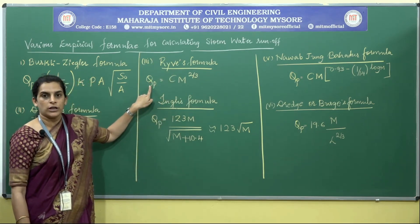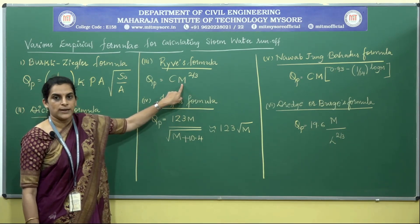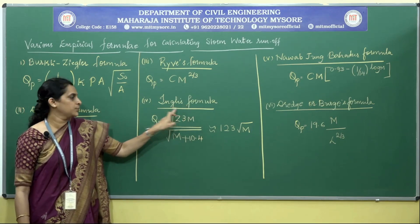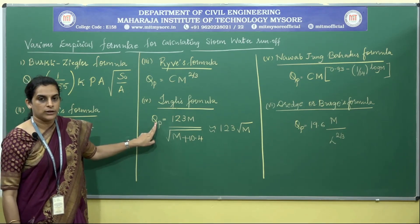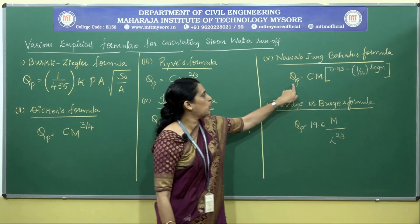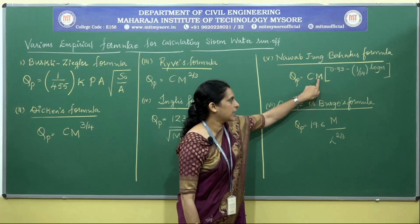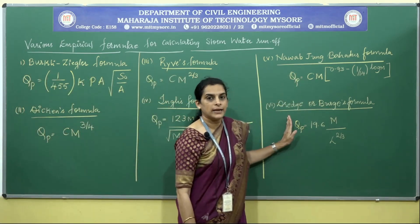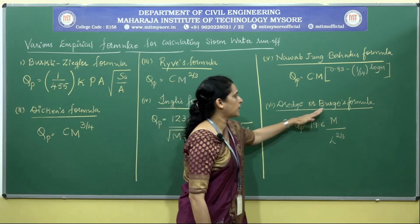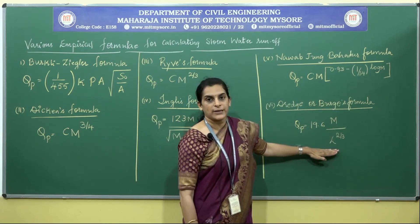The fourth formula is Ingles formula, suitable for fan-shaped catchments, where Q_p is calculated from catchment area m. There is also a formula derived for the Hyderabad region: Q_p = C × m, where C is the discharge constant and m is the catchment area. Finally, the formula based on Indian records is the Dredge or Burgess formula, where Q_p is the quantity of stormwater in m³/s, m is catchment area in square kilometers, and L is the length of the catchment area.